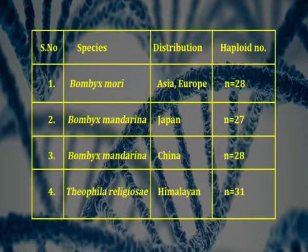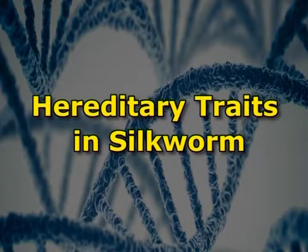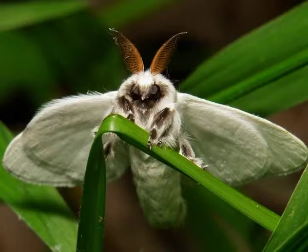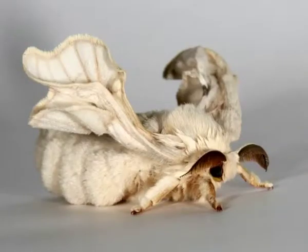Theophila religiosa from the Himalayan distribution has a haploid chromosome number of 31. The chromosomes of mulberry silkworm are very small in size and form a graded series. The chromosomes are holocentric in nature. Over 450 hereditary traits are known in the mulberry silkworm Bombyx mori, observed in the egg, larvae, pupae, cocoon, and moth stages. Majority are related with larval and egg characters.